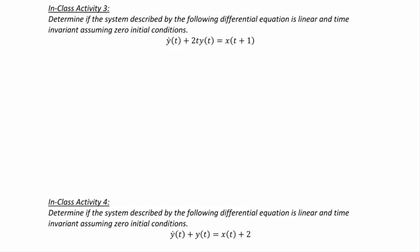Let's try differential equation examples. For ẏ(t) + 2t·y(t) = x(t) + 1, we can immediately say this system is not time invariant because of the 2t term multiplying y(t). Any function of time other than simple y(t) and x(t) means it is immediately not time invariant.